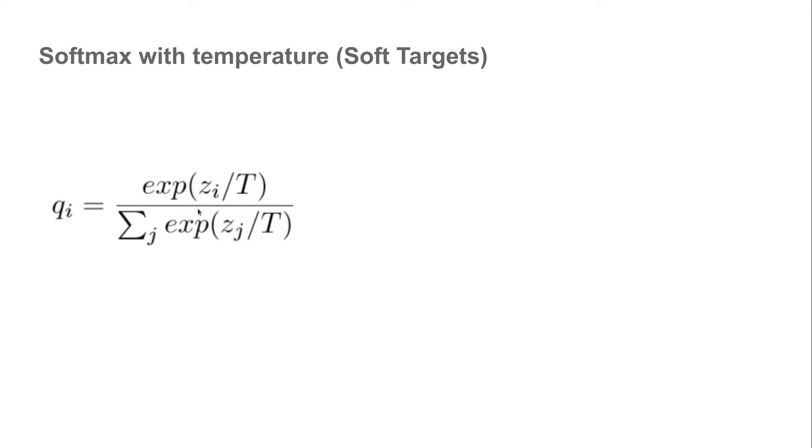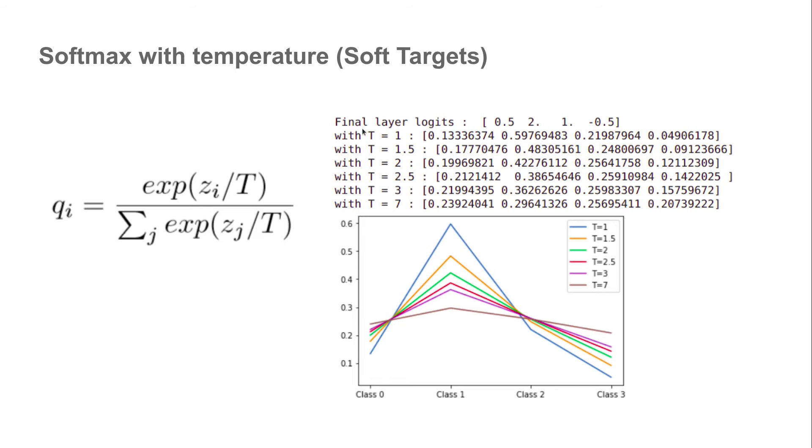Now what is softmax with temperature? So we take the values and the exponents and then we just divide it by this parameter called T. What happens when we do this? So these are the final layer logits: 0.5, 1, -0.5. These values are fed into this softmax with temperature and then we get something like this. So when T equals 1, it is as good as our softmax function. So we have the class with the highest value gets the highest probability. So it's as if the class with the highest probability, the probability is reducing a little bit and the rest of the classes are increasing a little bit. So it's kind of like smoothing.